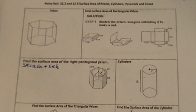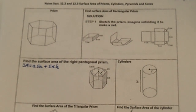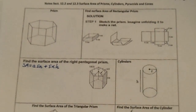Sections 12.2 and 12.3. Hopefully this video resolution will be a little bit better. The first thing we're going to talk about is the surface area of prisms and cylinders. That's what we'll talk about first, then we'll look at pyramids and cones.